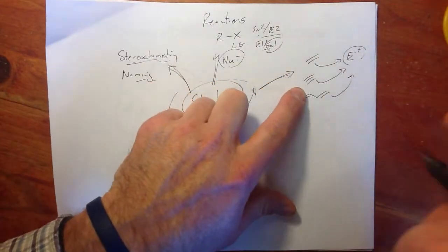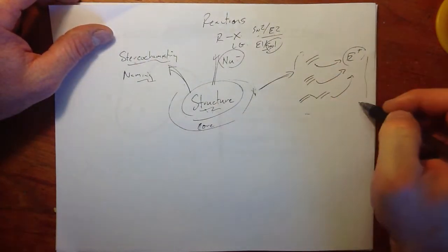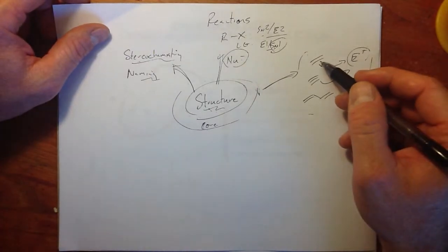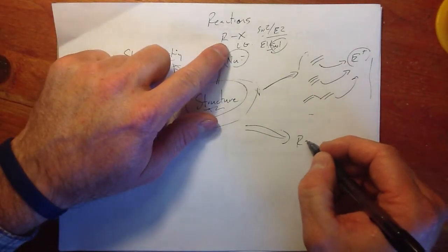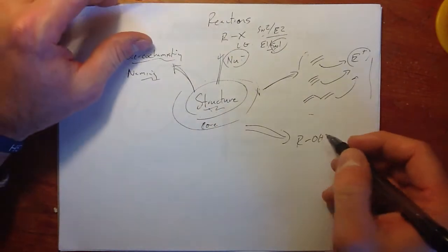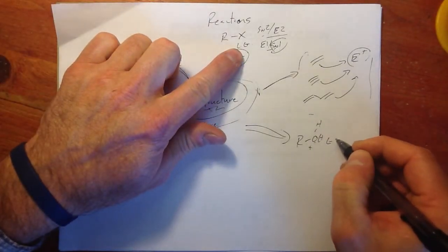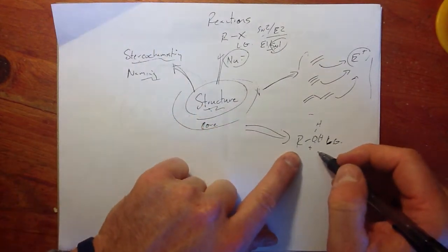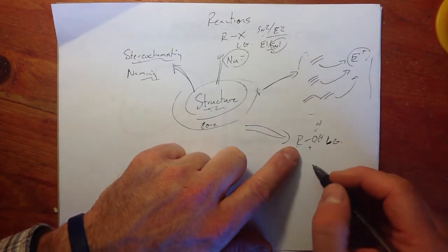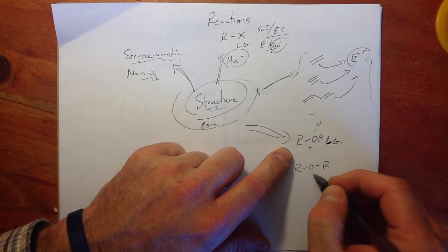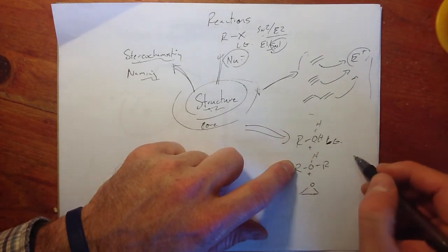Alkynes had a special story in how they can be attacked by a base to make an acetylide anion. Different electrophiles added to double bonds, triple bonds, and dienes. Going into OChem 2, we picked up with the story of alcohols, ethers, and epoxides, and how if protonated the alcohol gave us a good leaving group, just like we saw with alkyl halides.